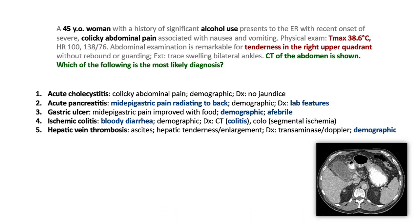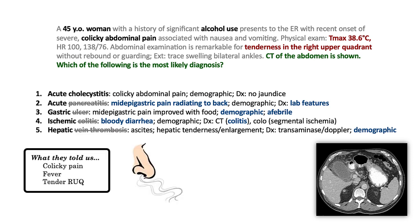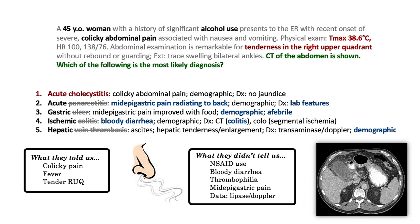The stem describes discomfort in the right upper quadrant, also in keeping with the diagnosis of acute cholecystitis. So based on what they told us — including colicky pain, fever, and tenderness in the right upper quadrant — and what they didn't tell us — including lack of NSAIDs, no bloody diarrhea, no thrombophilic state, no pain in the mid-epigastrium, and no data such as lipase or Doppler imaging — we were able to largely deduce the correct answer of cholecystitis.